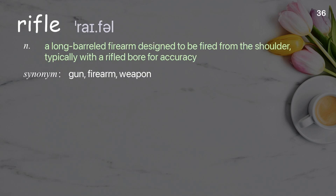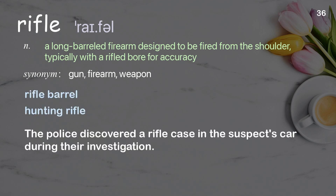Rifle: A long-barreled firearm designed to be fired from the shoulder, typically with a rifled bore, for accuracy. Examples: Rifle barrel. Hunting rifle. The police discovered a rifle case in the suspect's car during their investigation.